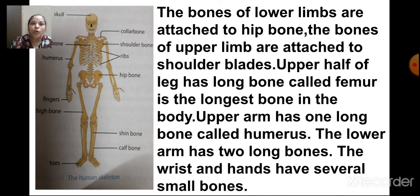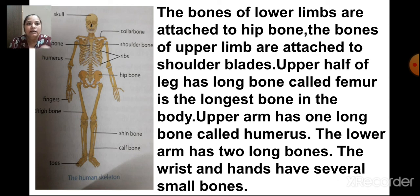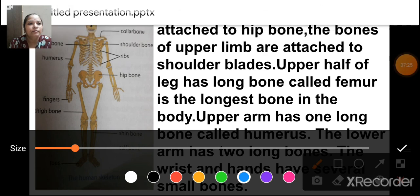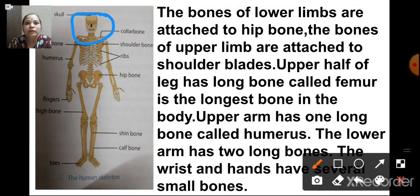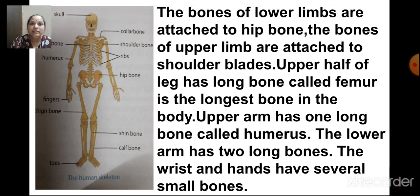The longest bone in our body is the thigh bone, the femur. Today we discussed in detail about the skeletal system and the various parts of the skeleton — the skull, the ribs, and the backbone — as well as the bones present in our limbs. We are going to end this session here.